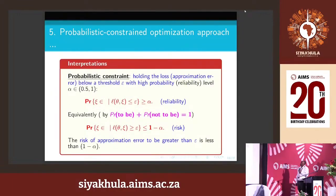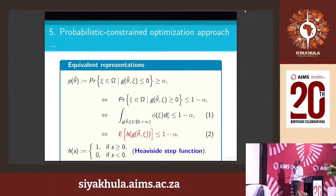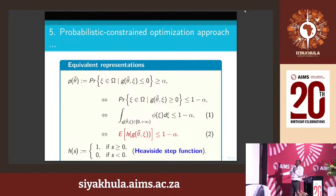Unfortunately, that problem is not trivial to solve because chance-constrained optimization with probabilistic constraints is usually difficult. But it can be restated. The probability constraint can be reformulated using a to-be and not-to-be condition due to the symmetry of probability, and written in terms of an integral. This can be expressed as a constraint in expectation form. The difficulty is that you have a jump function to represent the chance constraint, and you are integrating over a set that is not yet known because theta is a decision variable.